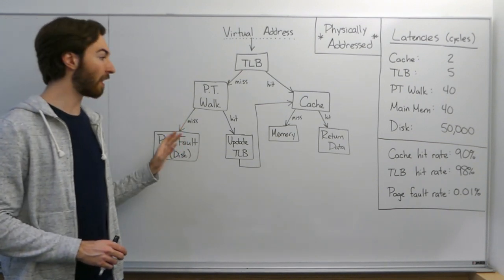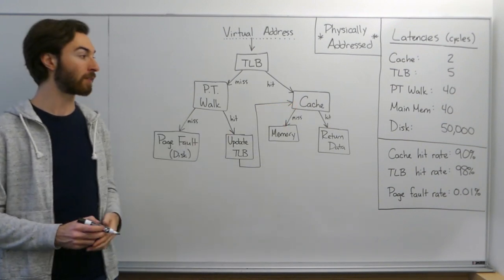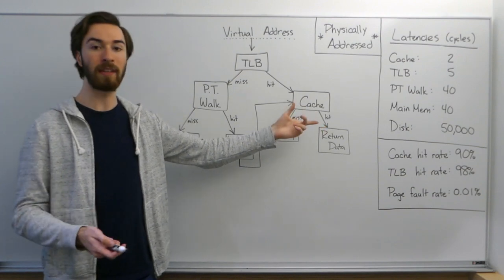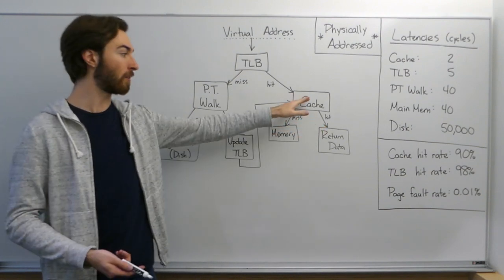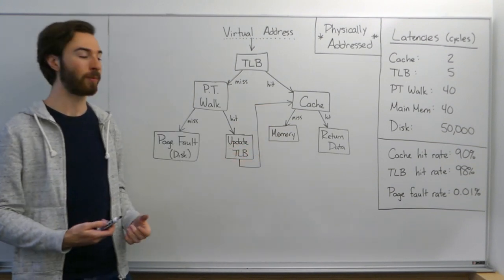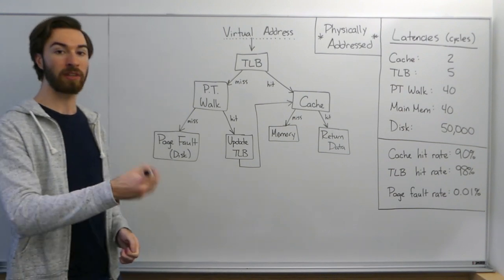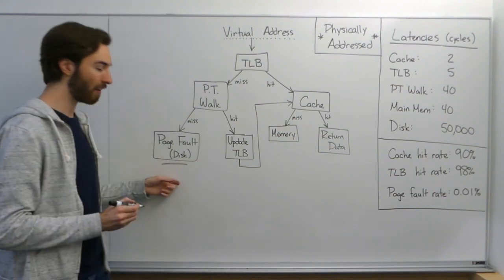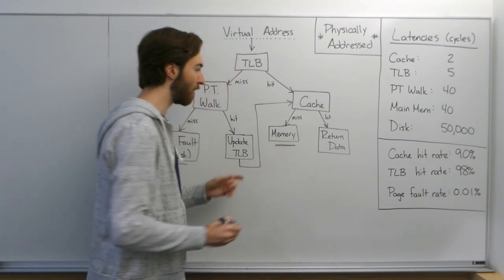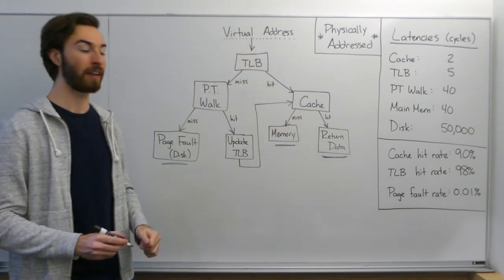But outside of that case, if we got to the cache with a physical address, that means our data is stored somewhere in physical memory. If it's a hit in the cache, we don't need to actually go to physical memory because it was stored in the cache. But if it's a miss in the cache, then we do need to go to memory with that physical address to get the data that we want. So the three different places you could actually return the data in this situation are: the page fault accessing disk, the miss on the cache when you go to memory, and just finding the data in the cache and returning it.